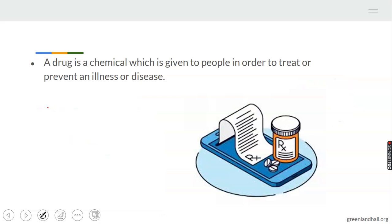A drug is a chemical which is given to people in order to treat or prevent an illness or disease. So we can also say that a drug is used to treat people, to prevent or cure disease. It's a chemical given to people to prevent illness occurring, to also heal or cure them from certain illness that they have.